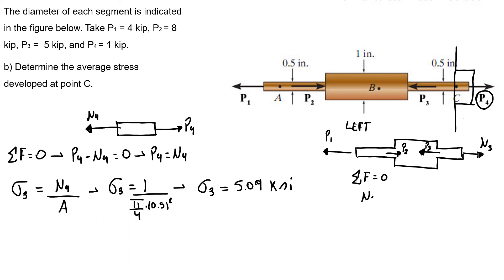So I have N3 plus P2 minus P1 minus P3 equals zero. So my N3 equals P1 plus P3 minus P2. My N3 equals 4 plus 5 minus 8. Our N3 is the same as N4, that's the same as 1 kip.